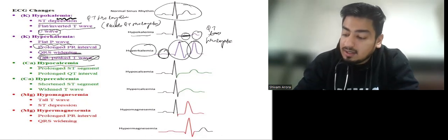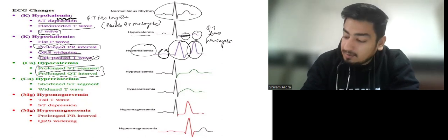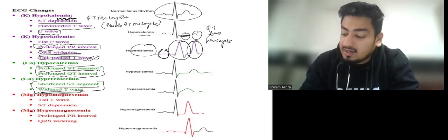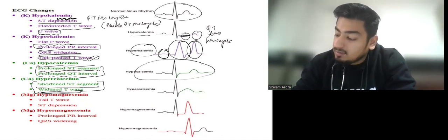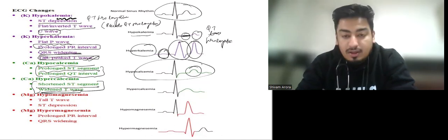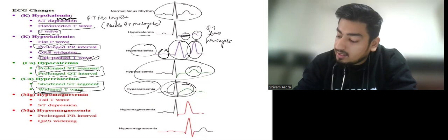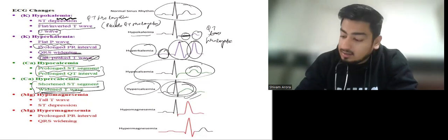Hypocalcemia may have prolonged ST and prolonged QT interval, while in hypercalcemia we have shortened ST and shortened QT intervals along with widened T waves. Here we can see in hypocalcemia there is prolonged QT, in hypercalcemia shortened QT and a widened T wave.